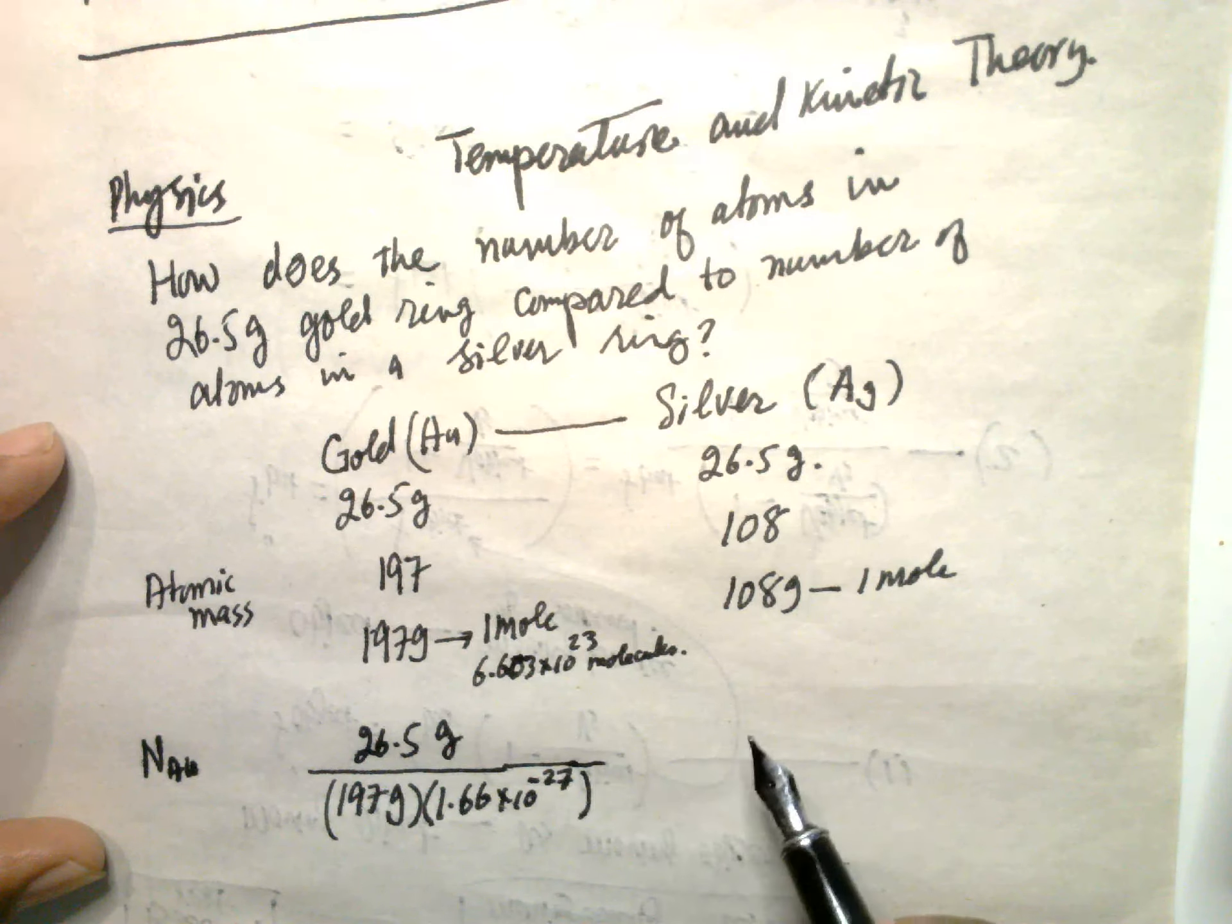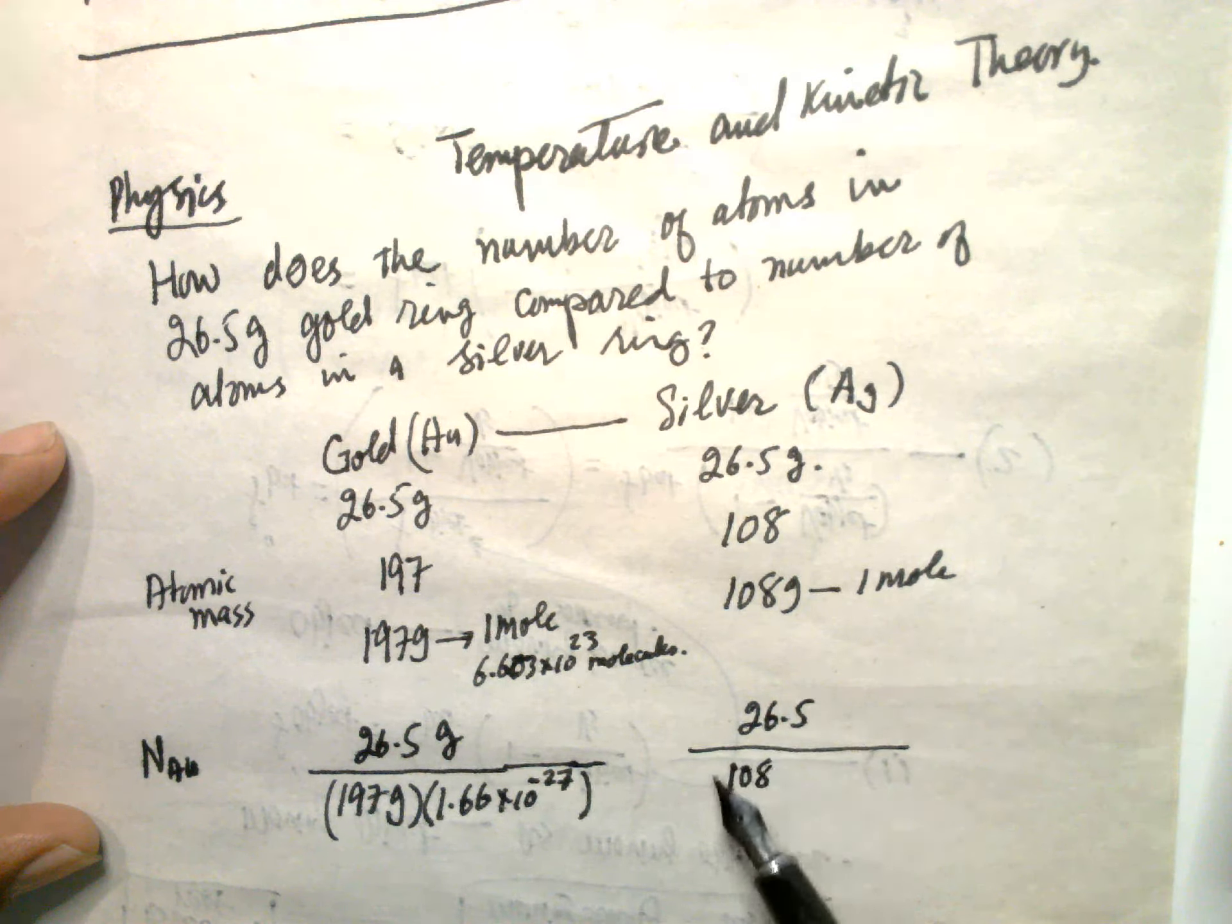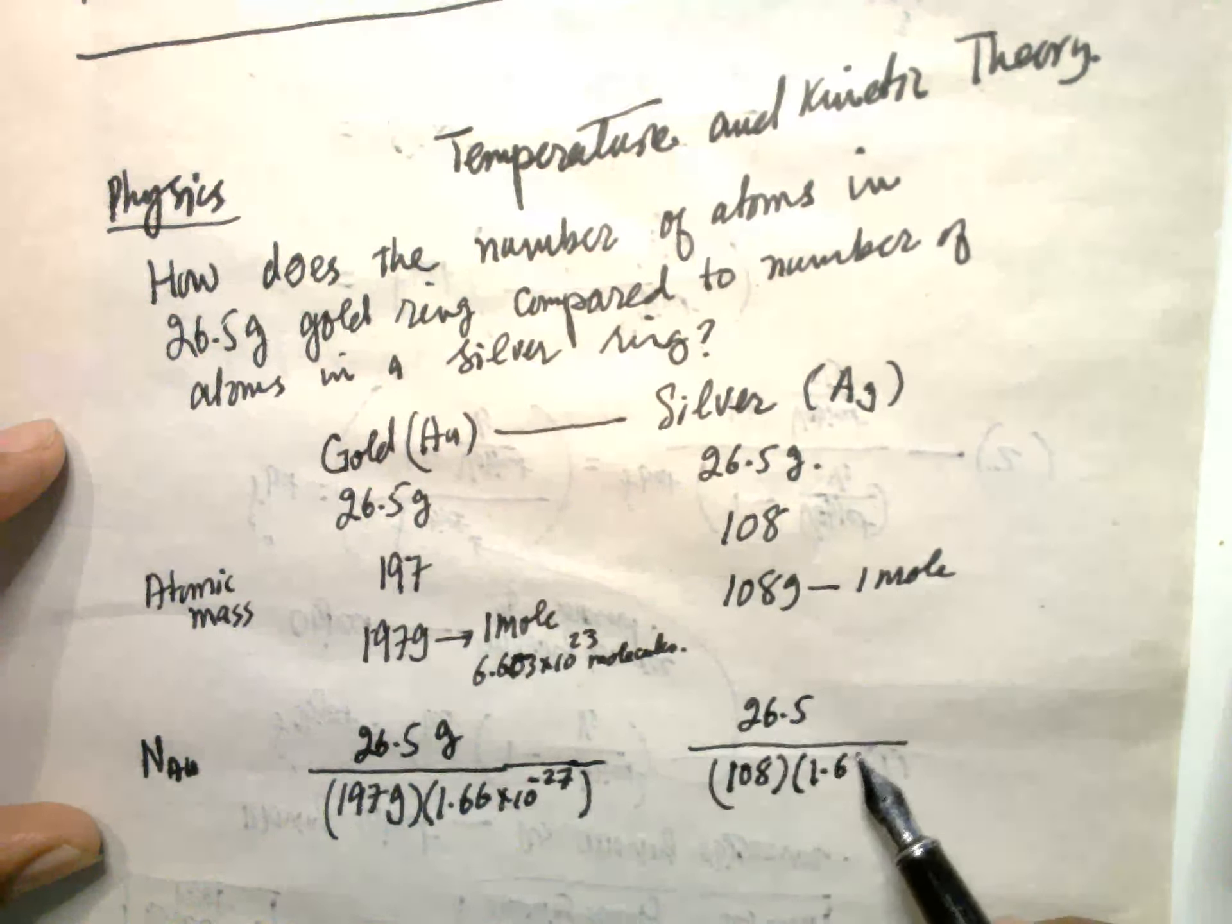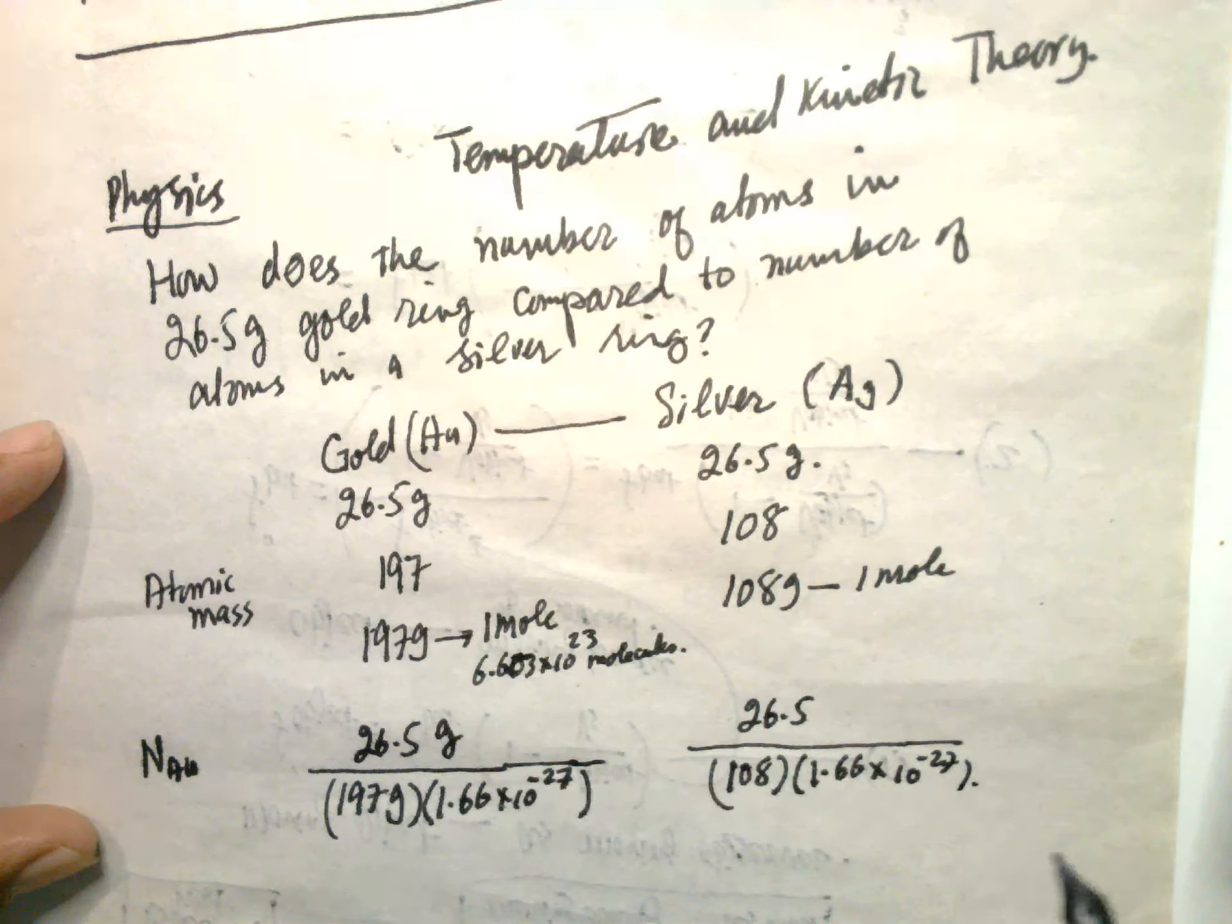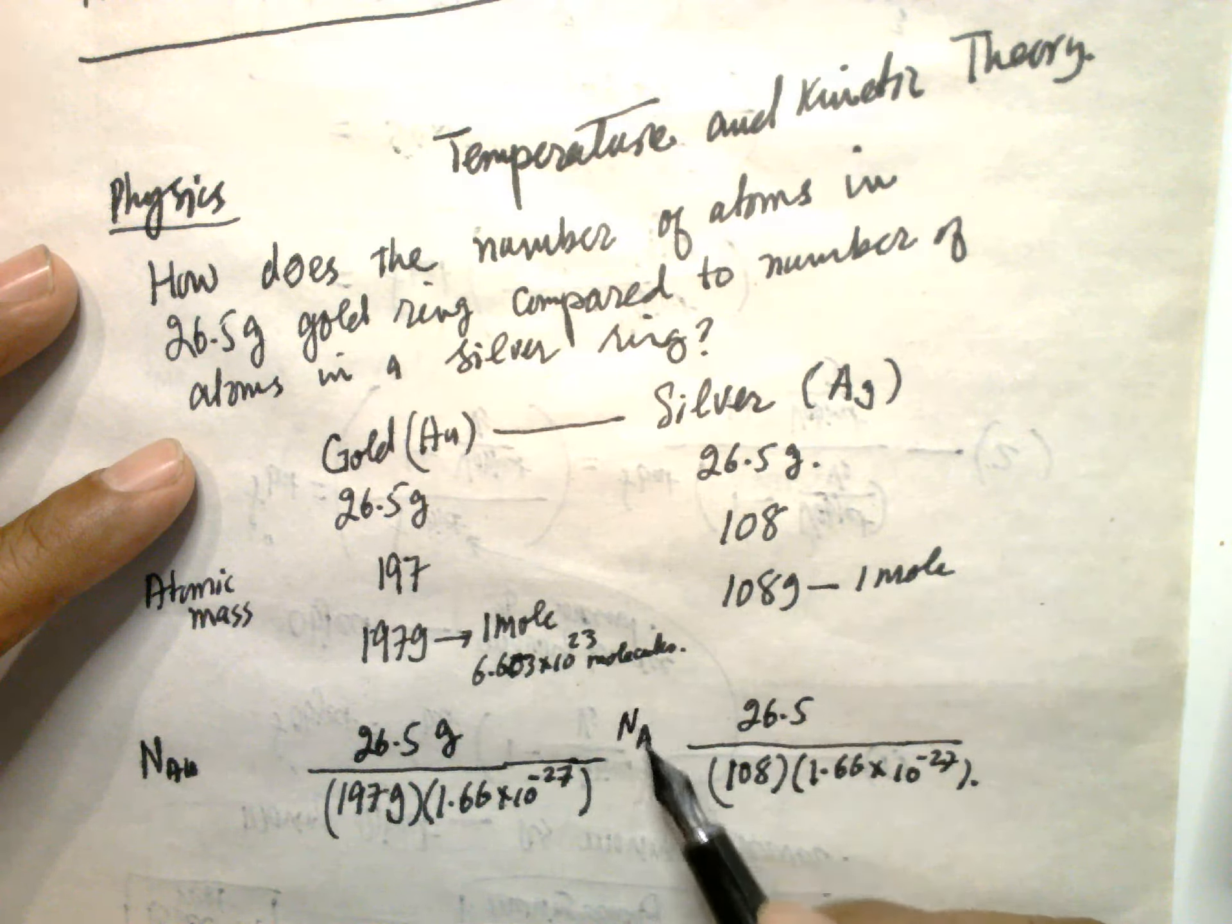So this is Au. And this one will be 26.5 divided by 108, times 1.66 times 10 to the power minus 27. So this is Au, this is N Ag.